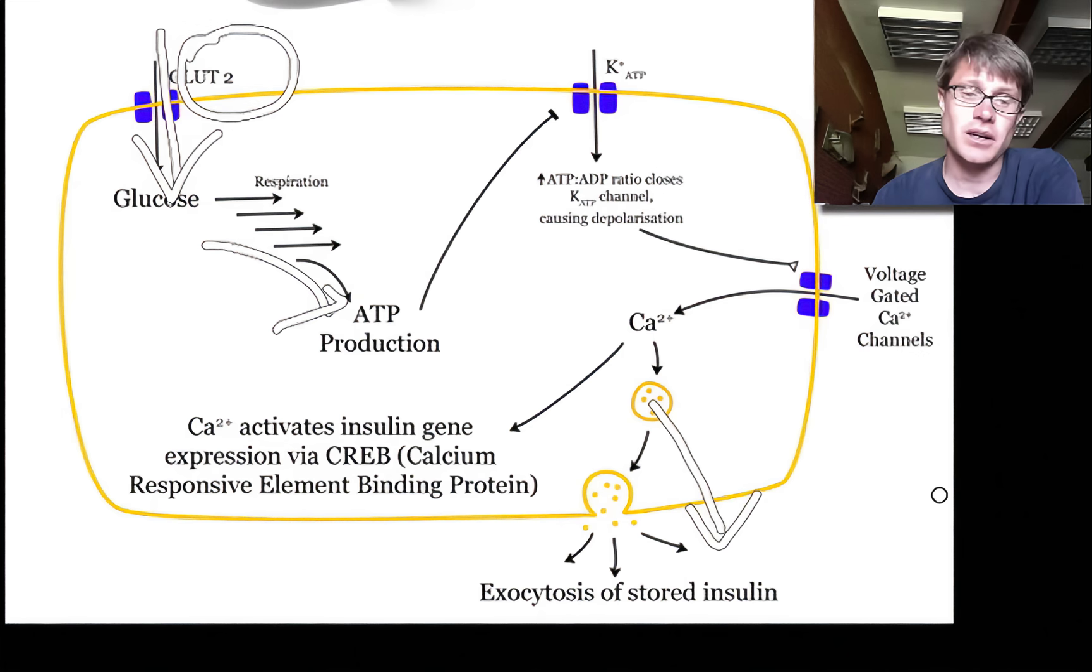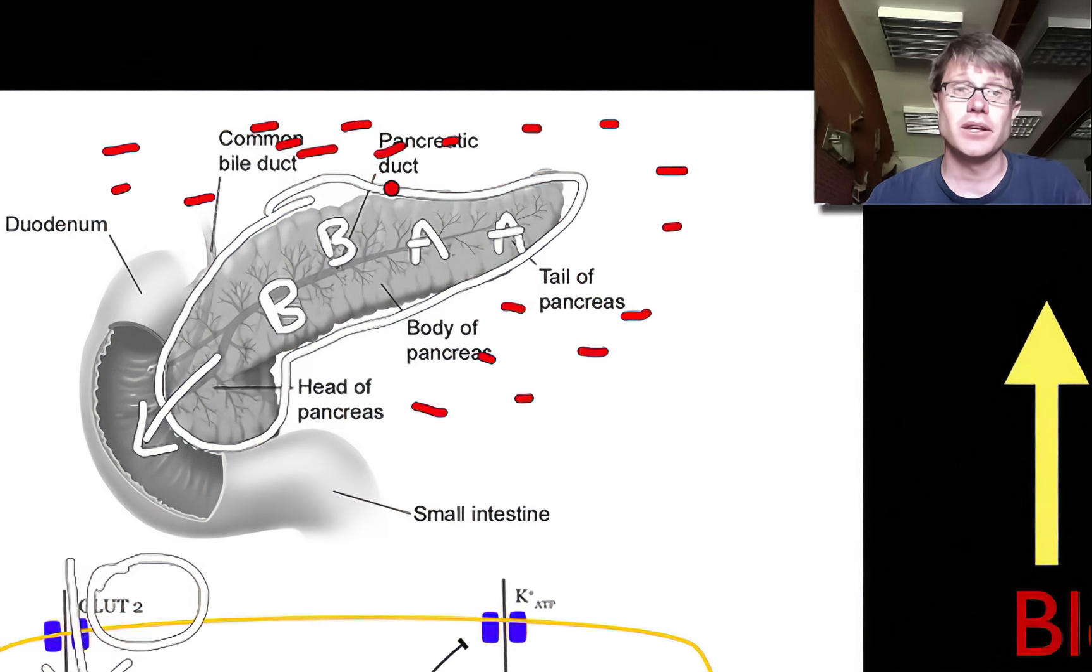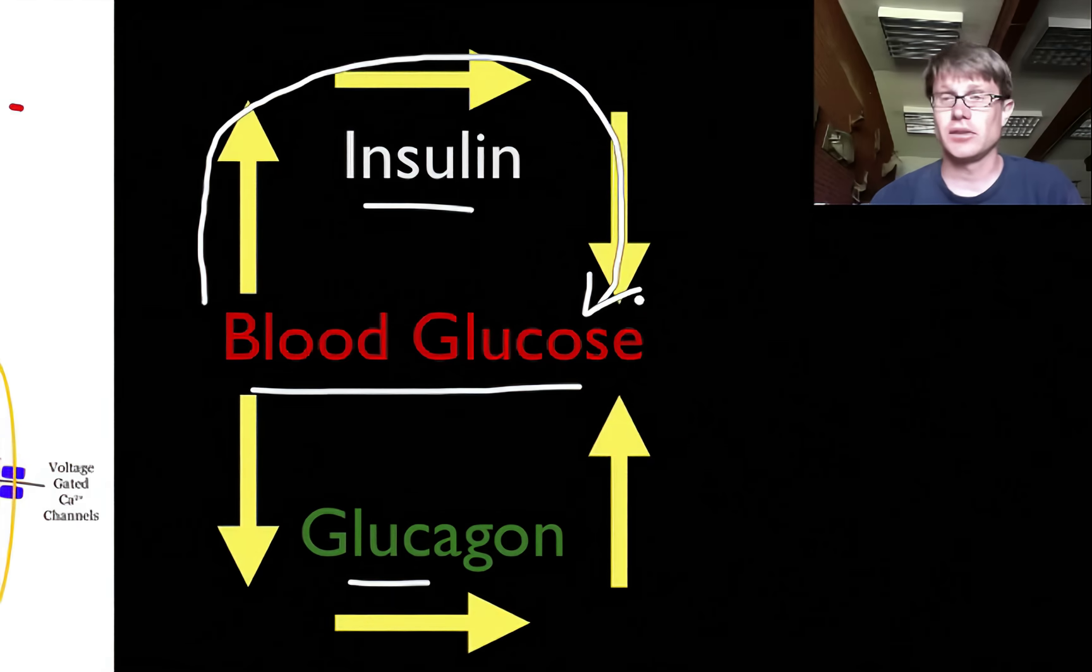What that means is when the blood glucose level is high, insulin, which I'll represent with this red kind of a dot, is going to be secreted from the pancreas. That's going to move throughout your whole body. It's going to trigger cells in your body to take in that blood glucose. It's also going to tell your liver to store that as glycogen. So when your blood glucose level goes too high, insulin is secreted. And that's going to cause your blood glucose level to go down.